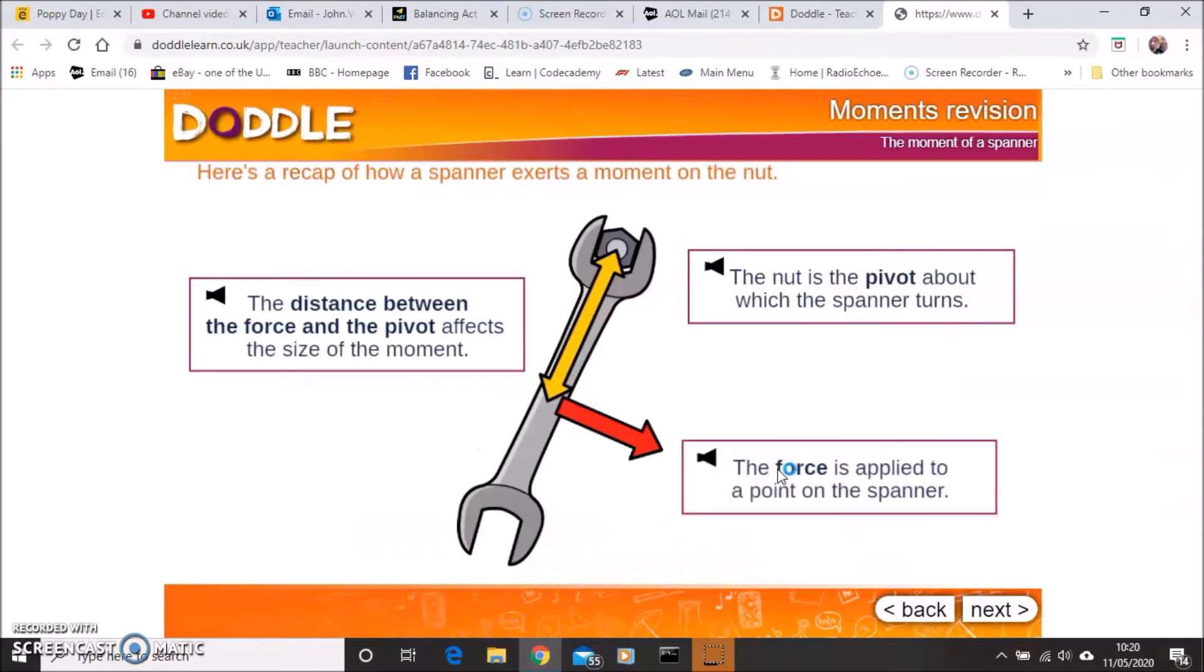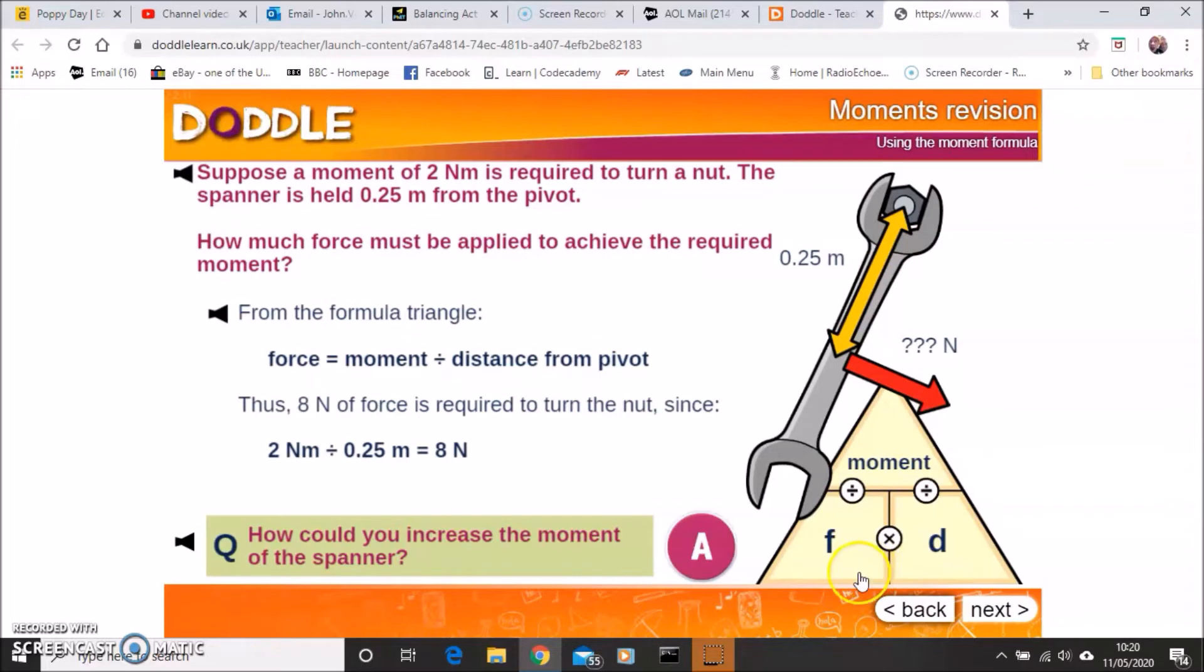If I just move on, let's go back to our spanner, nut and bolt. Here would be the pivot. Here's where the force is being applied to that spanner. Here's the distance that that force is being applied. And if you know all those things, then using that equation, you can work out how much force is being applied to that nut and bolt. What I suggest you do is that you actually follow the link and you look through this stuff yourself on Doddle.